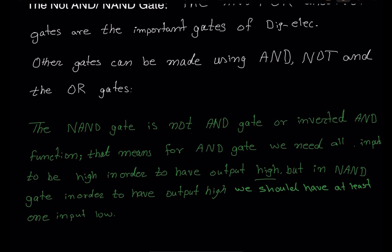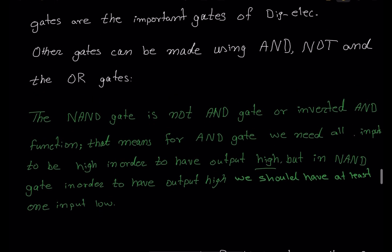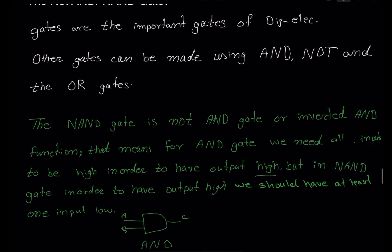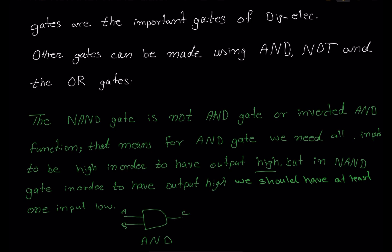So what is a NAND gate? The NAND gate is a NOT AND gate, or inverted AND function. For the AND gate, we need all inputs to be high in order to have an output high. But in the NAND gate, in order to have an output high, we should have at least one input low. For example, we have an AND gate with inputs A and B. For AND gate, we should have input A and B both high to get output C high. If input A or input B or both are low, the output C will be low.